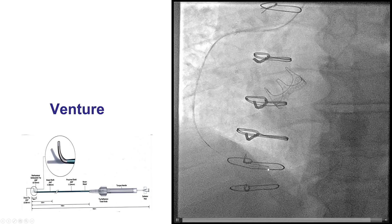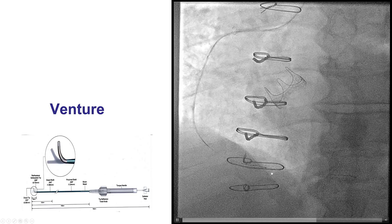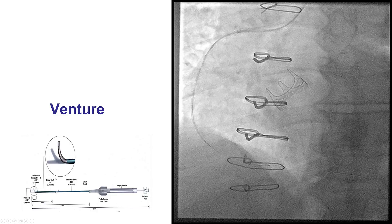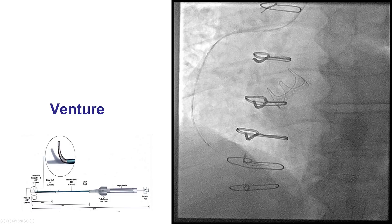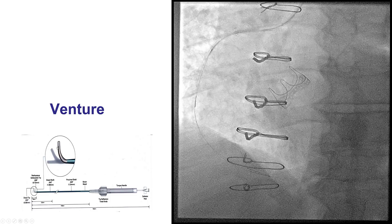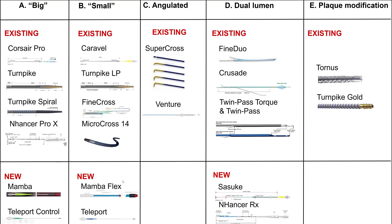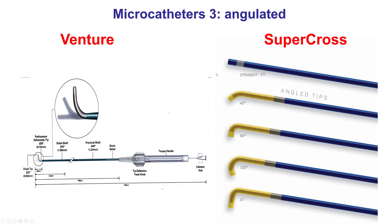The second challenge was wiring through the distal touchdown — a common challenge with saphenous vein grafts. This can be facilitated using an angulated micro catheter. In this case we used the Venture, which by turning the knob can achieve up to a 90-degree angle at the distal tip. This device was unavailable for a few years but is now back. The other angulated micro catheter option is the Supercross, with pre-shaped angles up to 120 degrees. We typically use the 120-degree only, because once the wire goes in, it becomes a little less angulated, about 90 degrees.